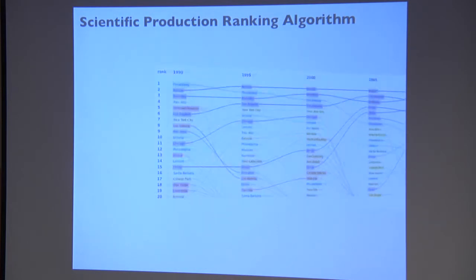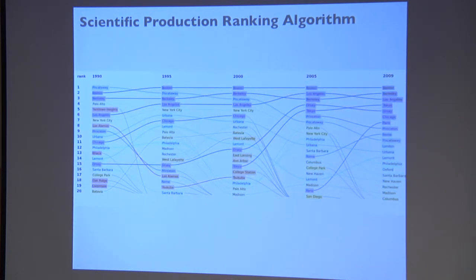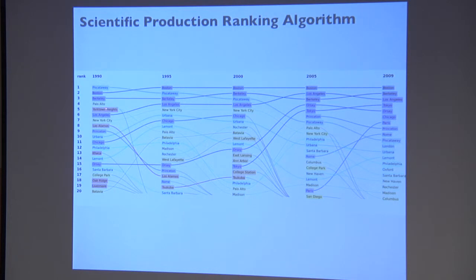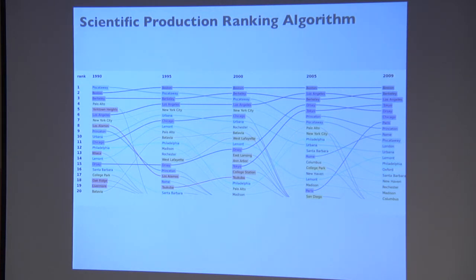What about the ranks? This is the big picture. From the 1990s to 2009, every five years, the top 20 cities: Boston is first — Boston here includes Cambridge. Boston was second in the 1990s and has been first for more than 20 years. Other cities like Palo Alto were in the top ten, then went down and disappeared from the top 20. Orsay in France jumped up and stayed there. Rome was not in the top 20 until 2005 and is now up in the top ten.